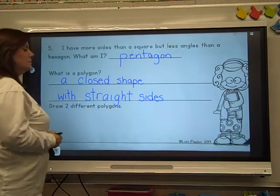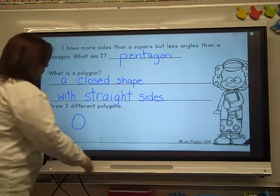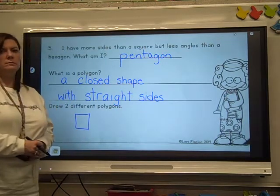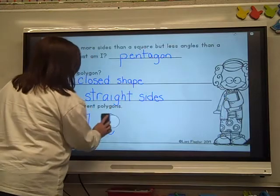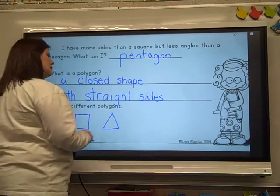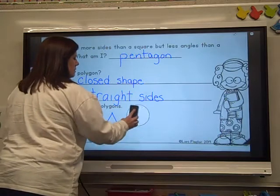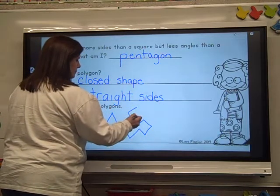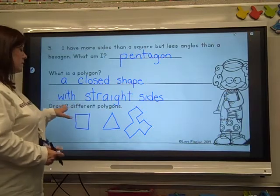Draw two different polygons — it has to be closed and it has to have straight sides. Can I do a circle? Nope. Can I do a square? Yep. Can I do an oval? Nope. Could I do a triangle? Yep. Could I do an open shape? Nope — it's not closed. But a closed shape with straight sides? Yes, because it has straight sides and it's closed. You need two.